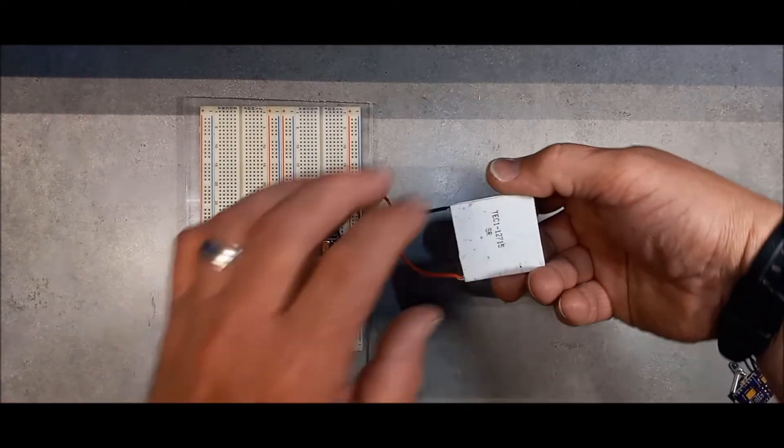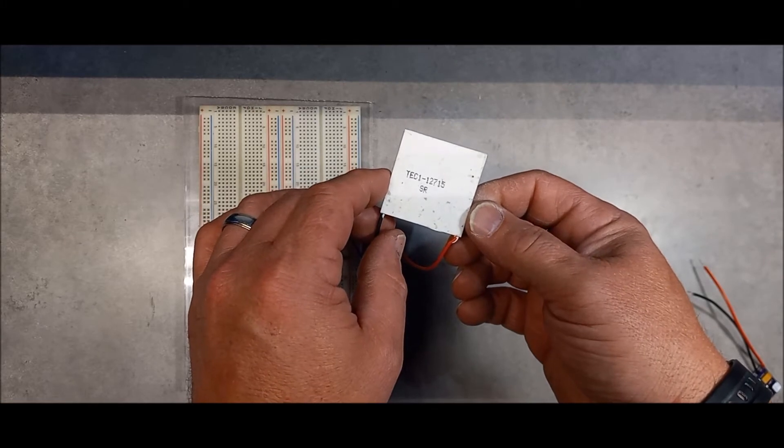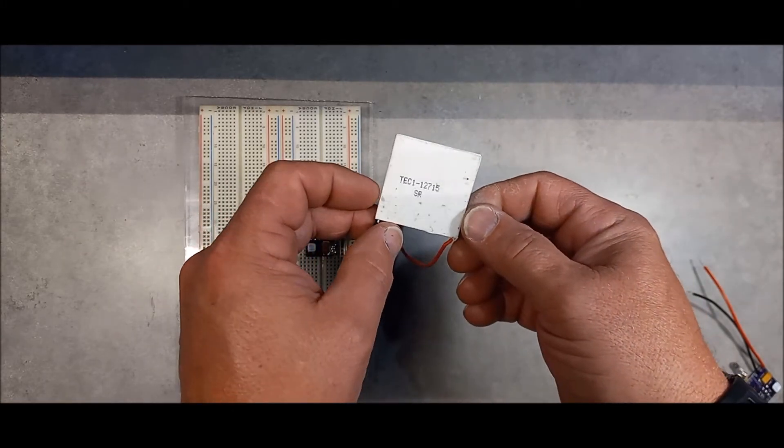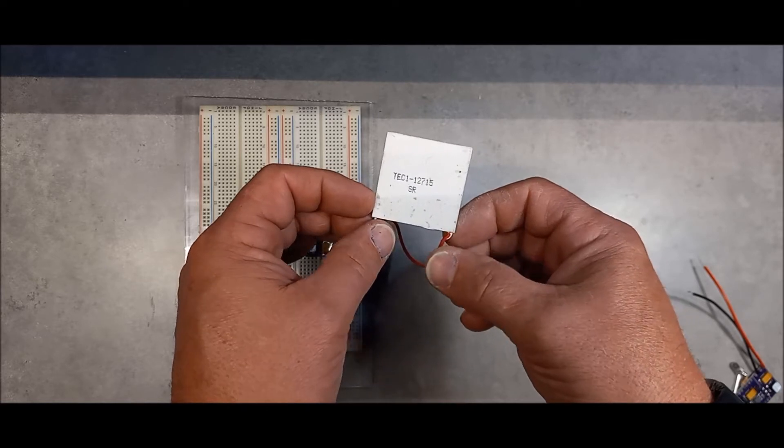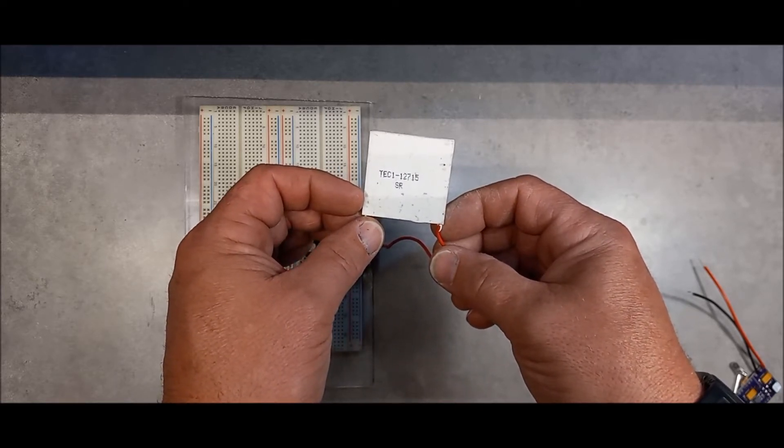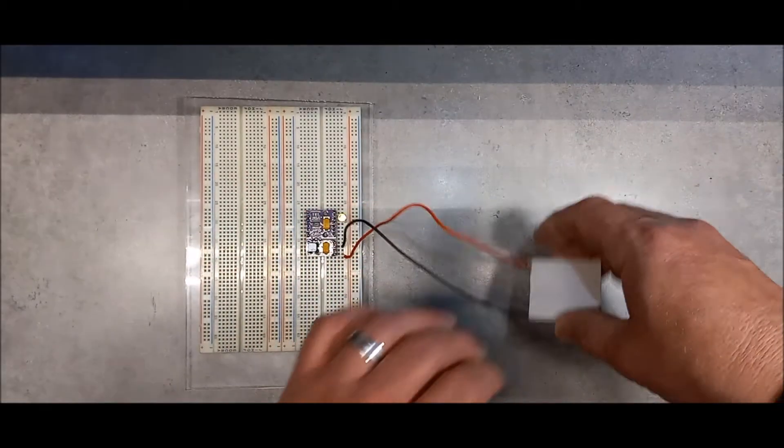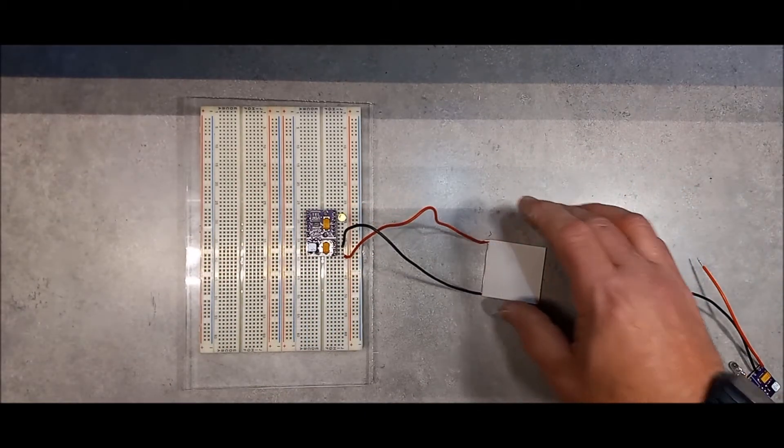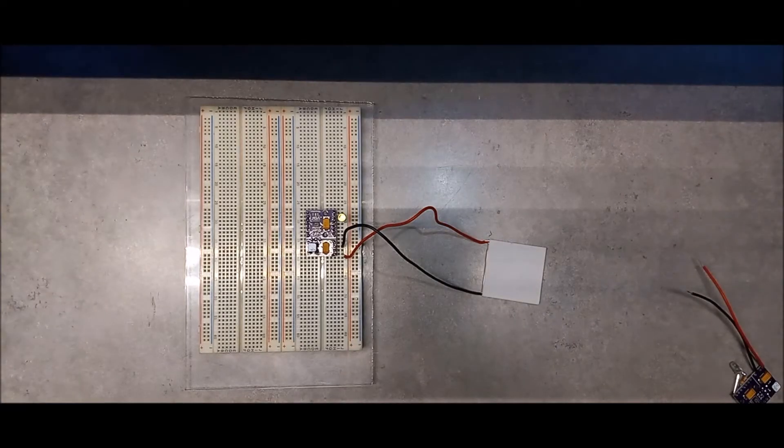They make quite a bit of current for what they are. It's a thermoelectric cooler, this one is a TEC1-12715, which I think means that if you put 12 volts into it, it will draw 15 amps. But it does something really amazing: it only puts out about 200 millivolts on open circuit tests.